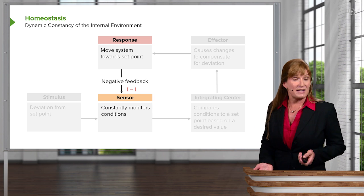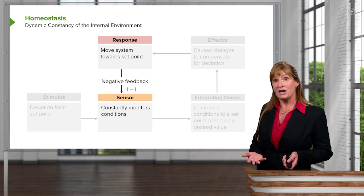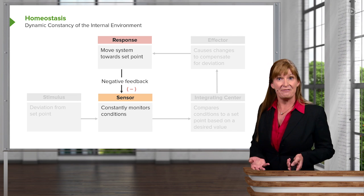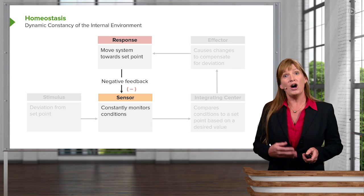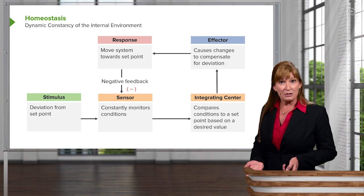There are two mechanisms for homeostasis. The predominant one in biological systems is the negative feedback loop. However, on occasion, we'll see a positive feedback loop.